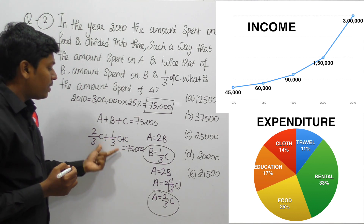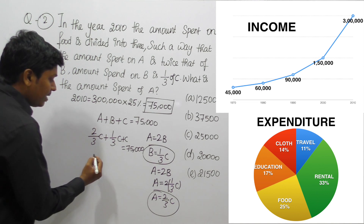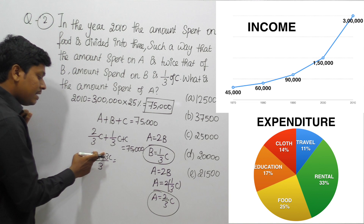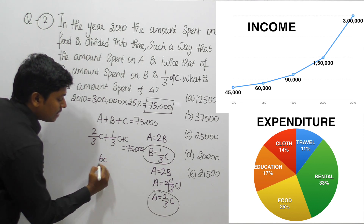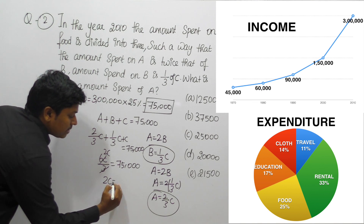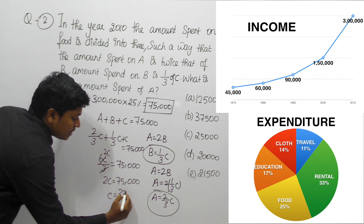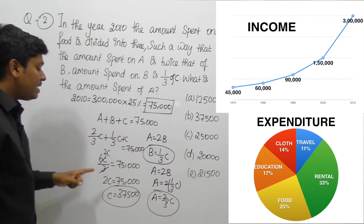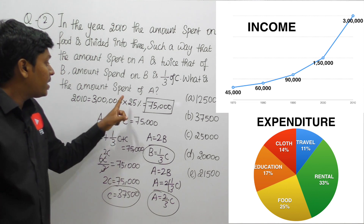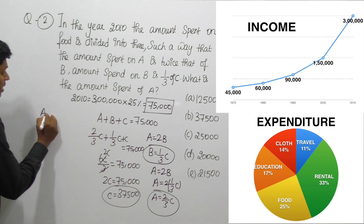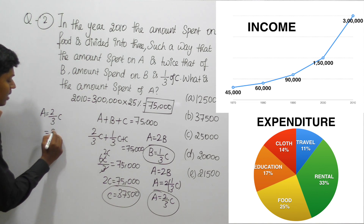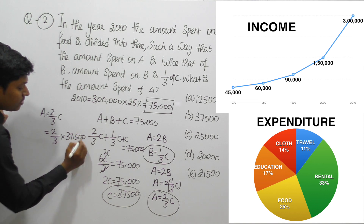Converting all terms in terms of C: A + B + C = 2C/3 + C/3 + C. Taking LCM of 3: (2C + C + 3C) / 3 = 6C/3 = 2C. So 2C = 75,000, which gives C = 37,500. We have found the amount spent on C, which is 37,500, but our target is to find the amount spent on A.